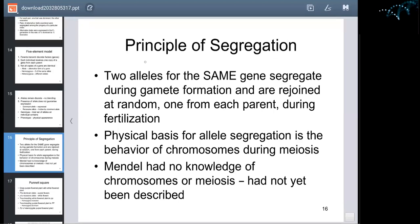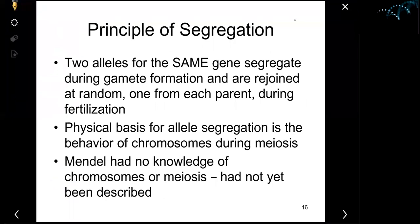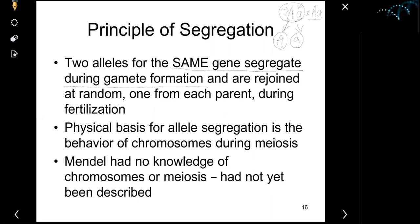The principle of segregation talks about how alleles of the same gene behave. We did this with the monohybrid cross — mono meaning one trait, hybrid meaning two different heterozygous individuals — and we crossed them and asked how do they behave? They separate. Gregor Mendel figured out that every gene has two alleles, and during meiosis, alleles of the same gene segregate during gamete formation.